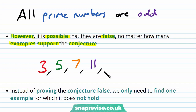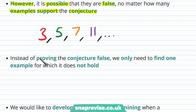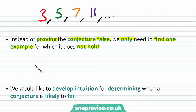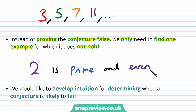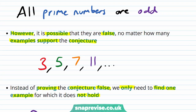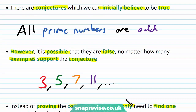So far, the conjecture is looking good. Instead of proving the conjecture false, we only need to find one example for which it does not hold. The number 2 is prime but is even. This is an example for which our conjecture — all prime numbers are odd — does not hold.